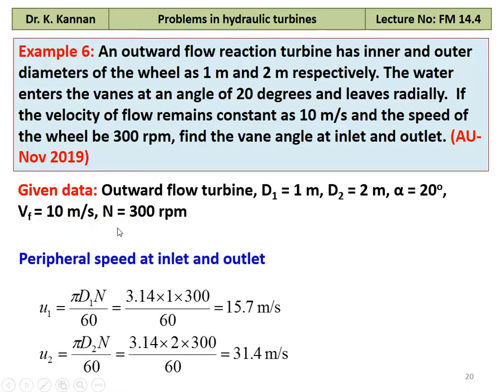We calculate the peripheral speed. U1 equal to pi D1 N divided by 60, which is 3.14 into 1 into 300 divided by 60 equal to 15.7 meters per second. And the peripheral speed at the outlet, U2 equal to pi D2 N divided by 60, which is 3.14 into 2 into 300 divided by 60 equal to 31.4 meters per second.